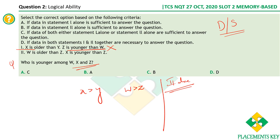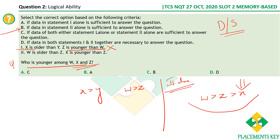From statement two alone: W is older than Z, and X is younger than Z — meaning Z is older than X. So we have W > Z > X. We know clearly that X is the youngest. That's exactly what we need to find. Statement two alone is sufficient, so the answer is option B — data in statement two alone is sufficient.